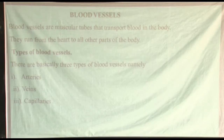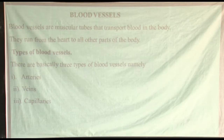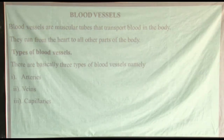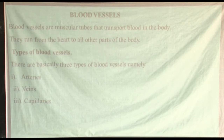They are tubes just like water pipes, transporting water from the source to homes or different places. These blood vessels run from the heart to all other body parts, transporting blood and different materials in the body — hormones, water, nutrients. These materials are all transported by blood vessels.